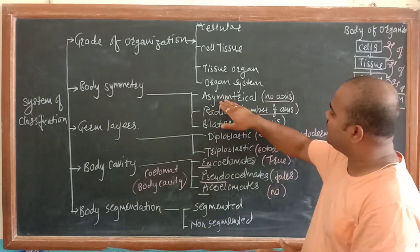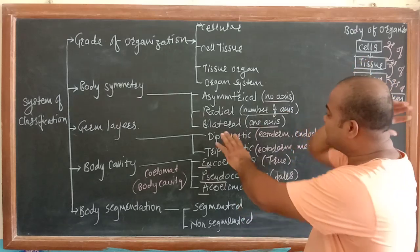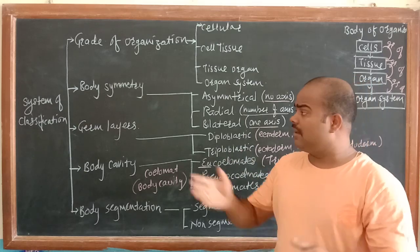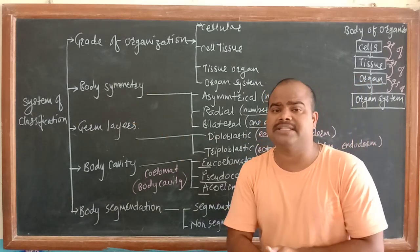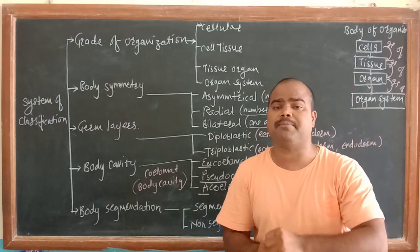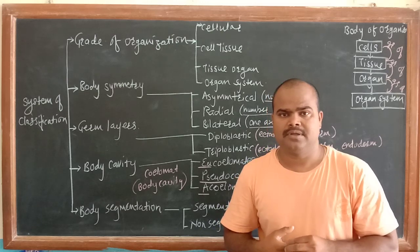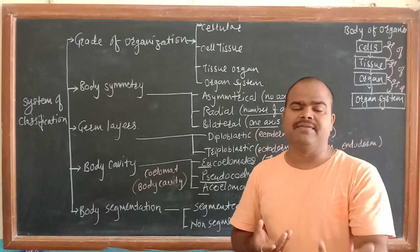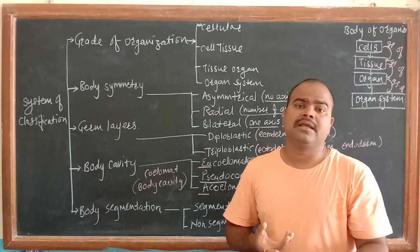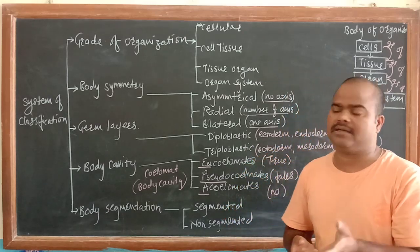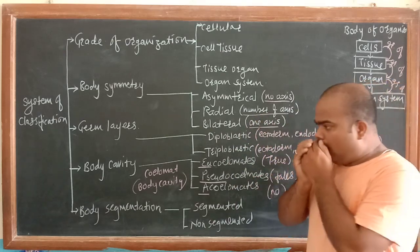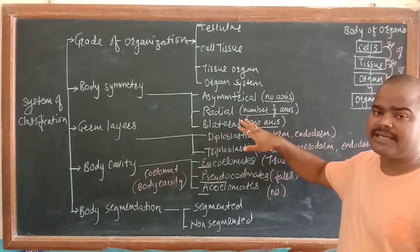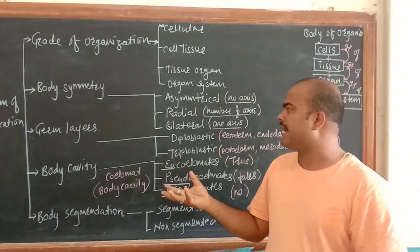So it is asymmetrical. Next is radial symmetry. When we were discussing body symmetry, we discussed one example - the lemon or any circular sphere, which can be divided equally in n numbers of imaginary axes. This radial symmetry is shown by circular organisms.